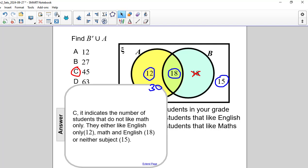Math and English, that would be 18 students. Or neither subject, which would be 15 students. The total of those numbers would be 45.